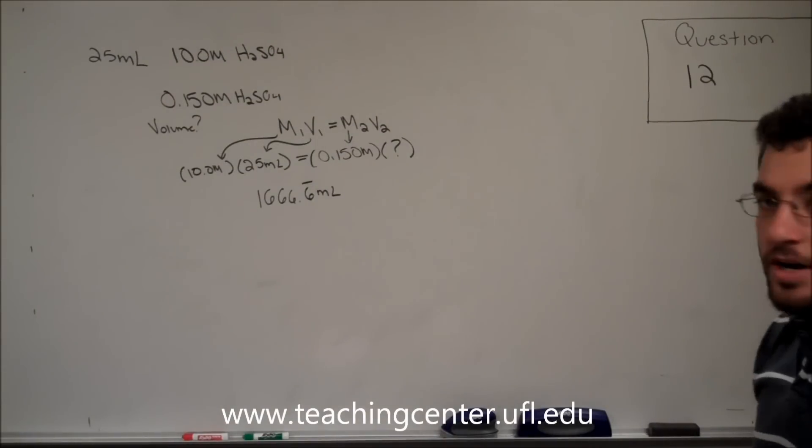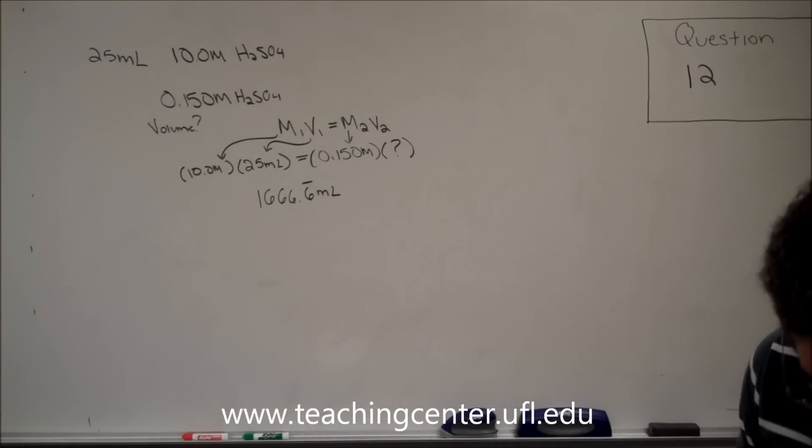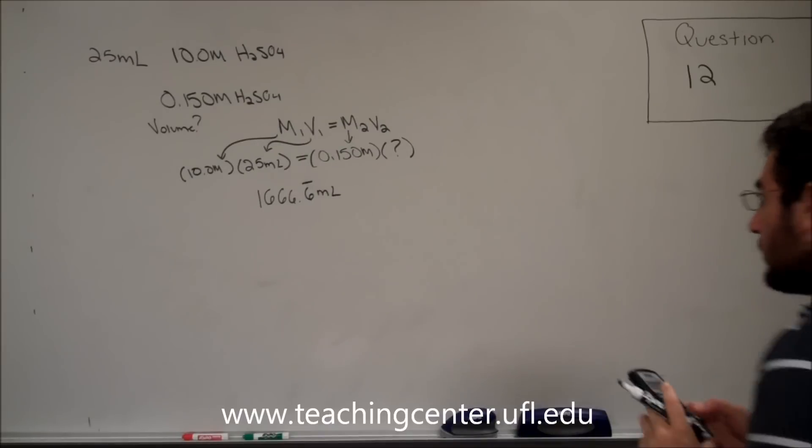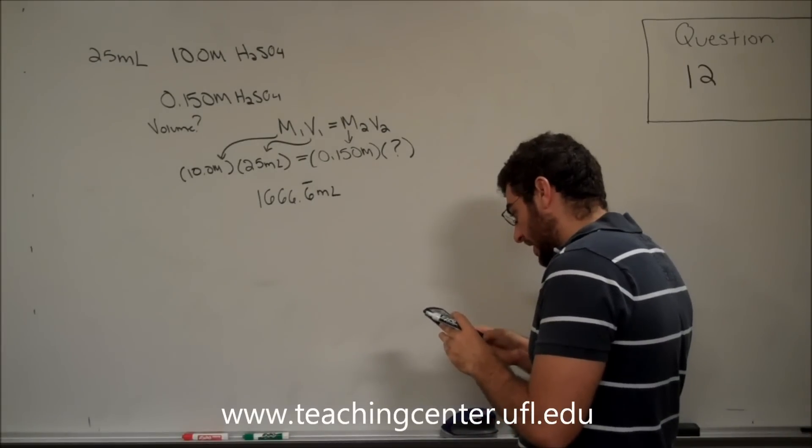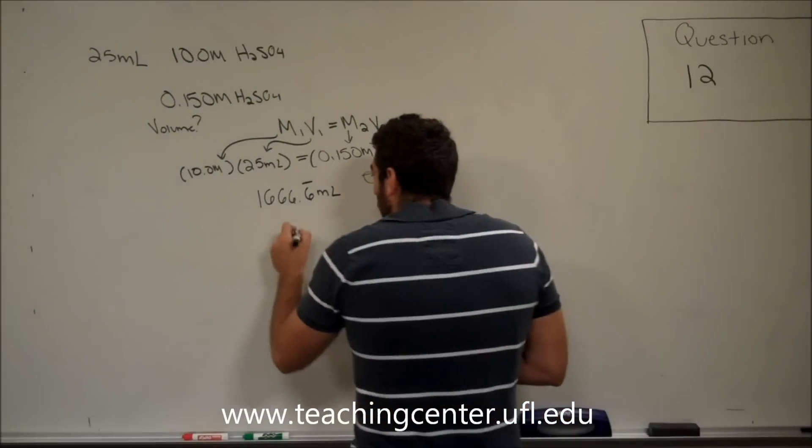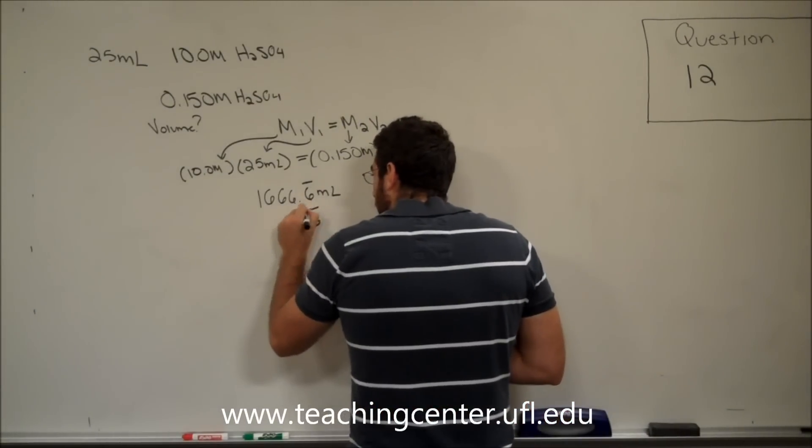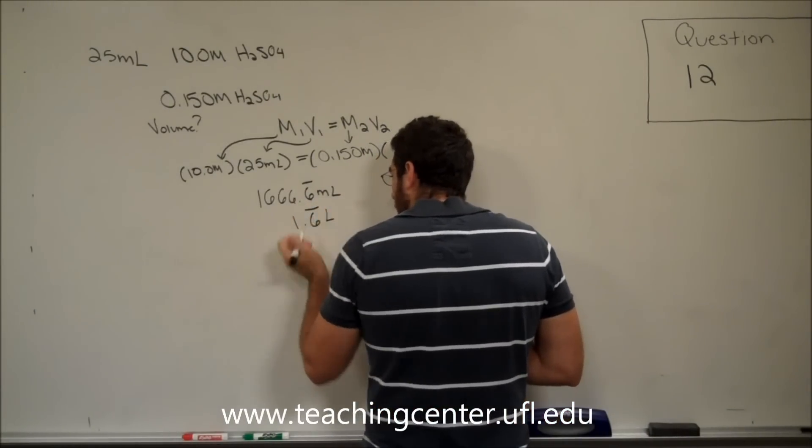So, if we go to our exam, all the answer choices are in milliliters. So, we do 1,666.6 divided by 1,000 equals 1.6 repeating milliliters.